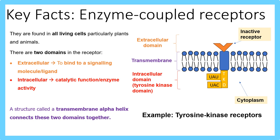Where are enzyme-coupled receptors found? They are found within living cells, especially eukaryotes — examples include plants, animals and fungi. There are two domains in the receptor: the extracellular domain, which is outside the cell, and the intracellular domain, which is inside the cell. The extracellular domain binds to the ligand, and the intracellular domain initiates enzyme activity — it has a catalytic function. An enzyme is a type of protein that helps increase the speed of a reaction. Connecting both domains is a structure called the transmembrane alpha helix.